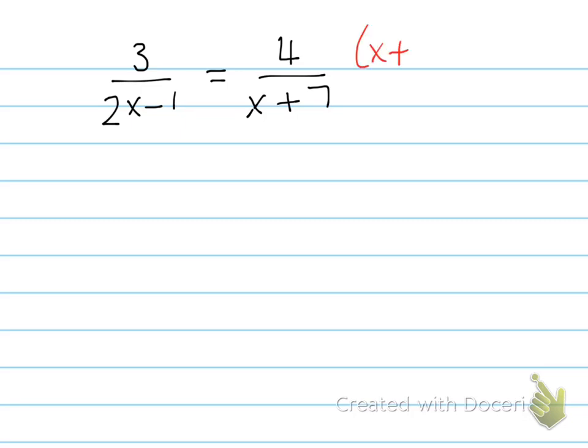So we'll multiply this side by x plus 7 and 2x minus 1, and we'll multiply the other side by x plus 7 and 2x minus 1. What that really amounts to doing is cross-multiplication. Let's see what happens.